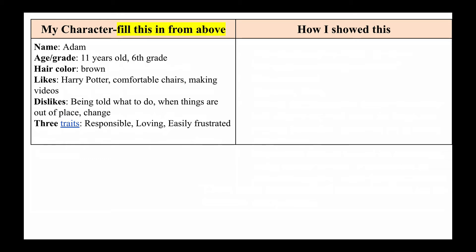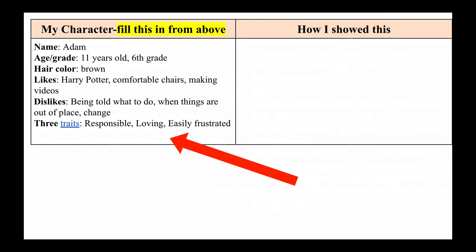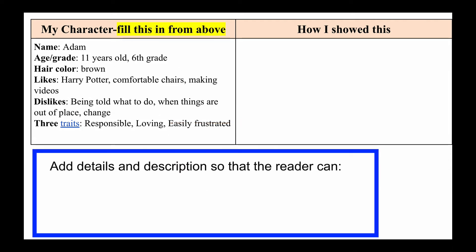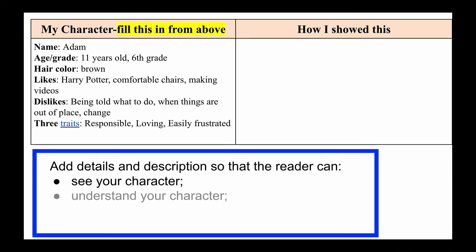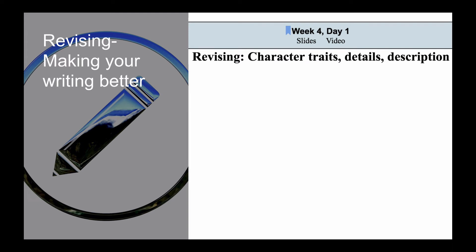I need you to do that — you're going to fill in this chart showing how you showed those things. You might have discovered some new traits, so switch them out — cross one out if your character has a different trait. Add some details and descriptions so that the reader can see your character, understand your character, know your character. Make sure you're using the STEEL chart and making your character better.